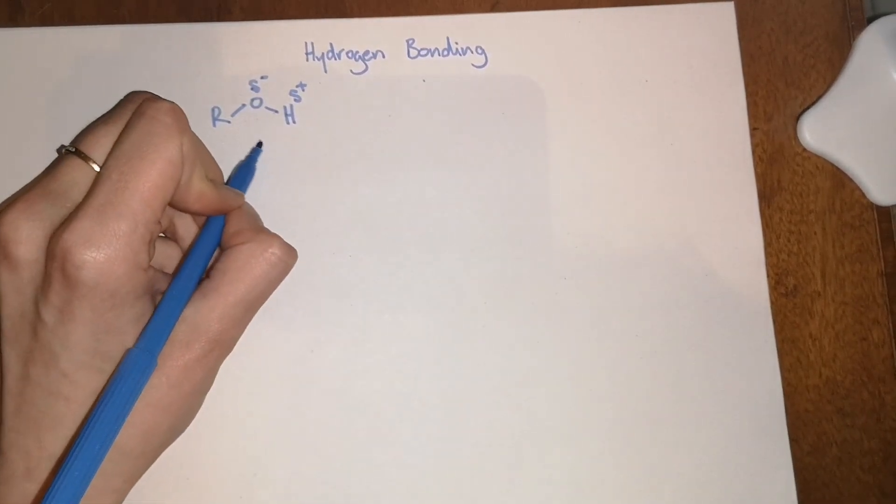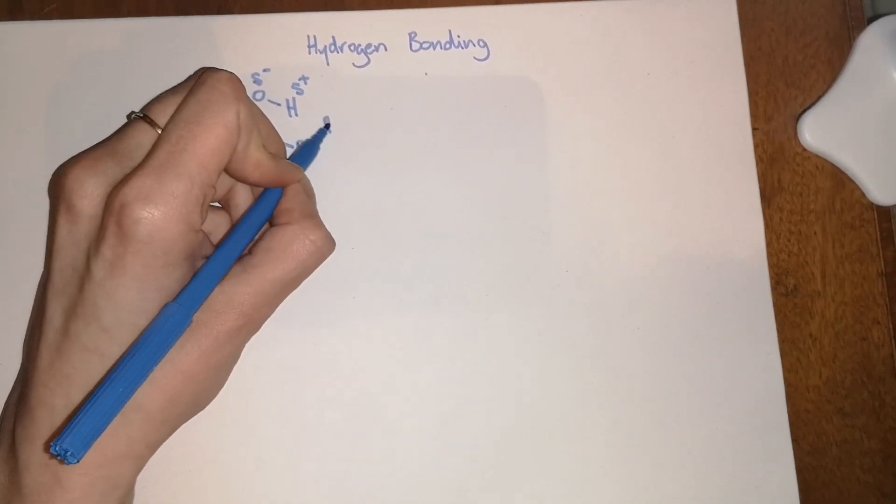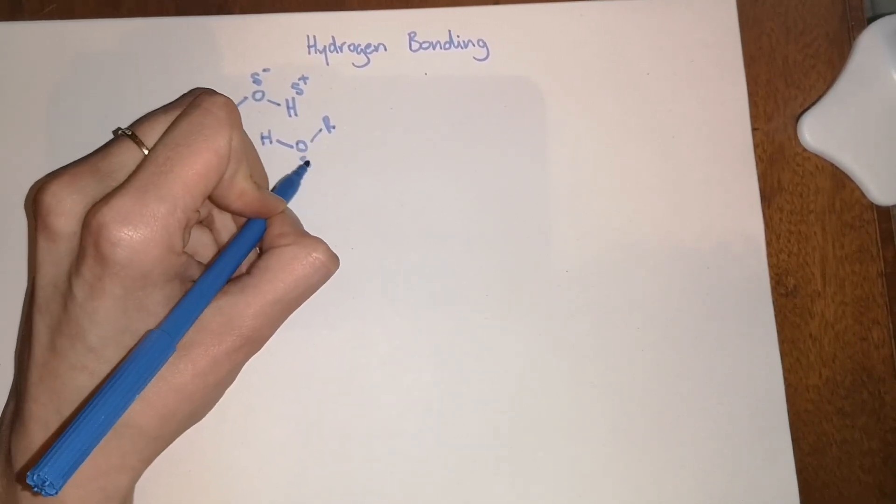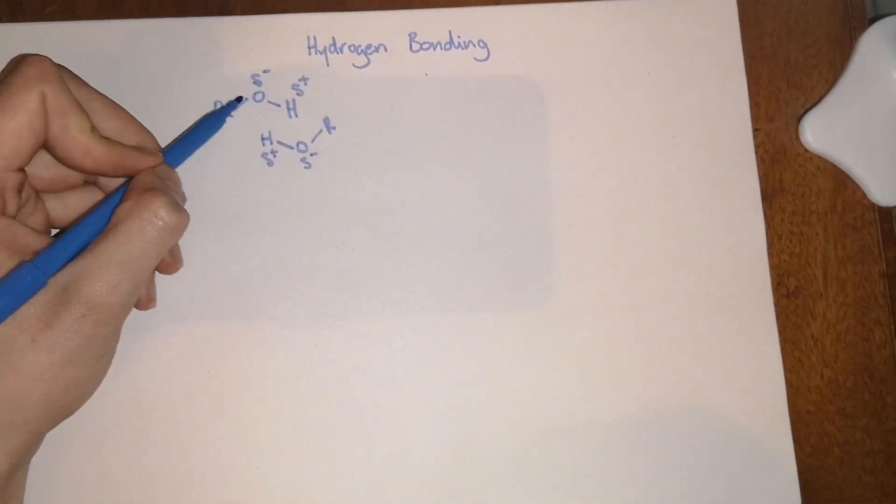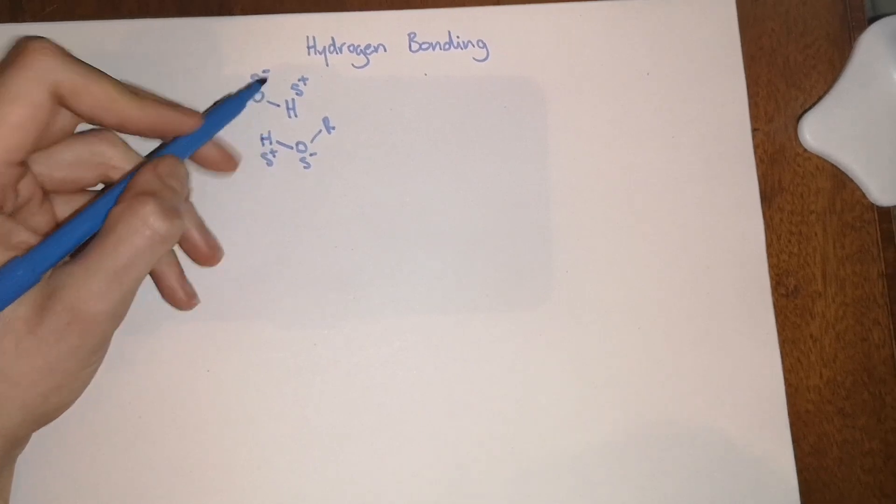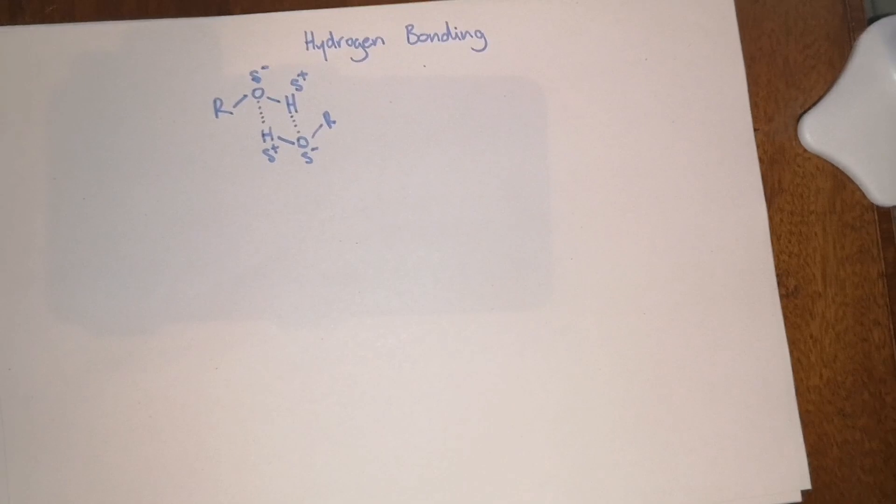So if another water molecule, sorry another alcohol comes along, it will similarly have those partial charges on the oxygen and on the hydrogen. What will happen is those two molecules will interact with each other and you'll get an intermolecular interaction known as a hydrogen bond.